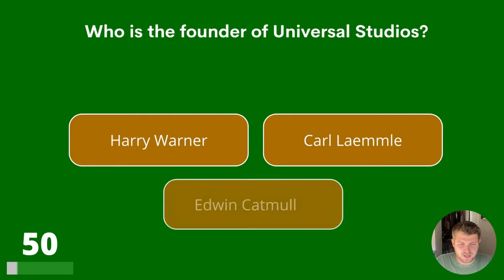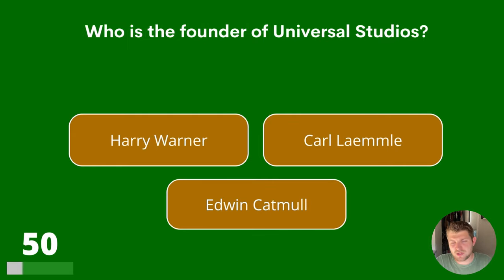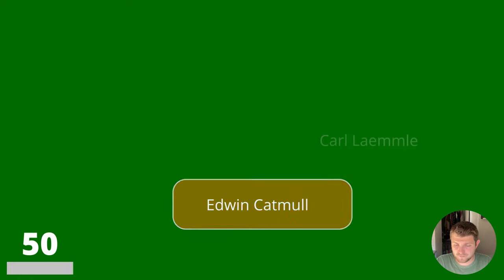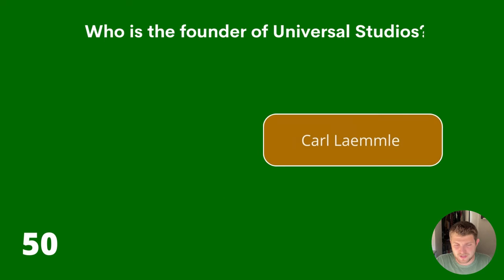Question 50. Who is the founder of Universal Studios? Harry Warner, Carl Laemmle or Edwin Catmull? The answer is Carl Laemmle.